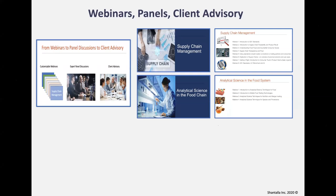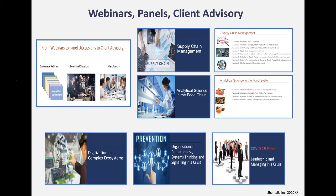On analytical science, we have a webinar series coming up with analytical chemists from around the world, including Source Certain in Australia, covering what analytical food science underpins transparency and trust in the food chain — how to prove something is organic, how to test for heavy metals. We also cover digitization in complex ecosystems, organizational preparedness, and next week a leadership panel on COVID-19 for several governments and industries.